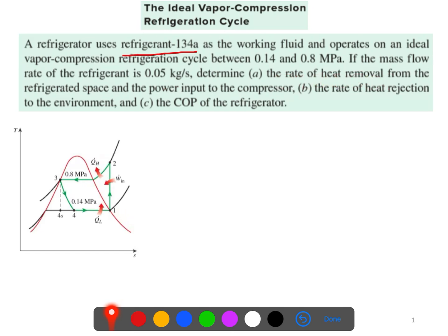We need to determine four things: the rate of heat removal from the refrigerant space (QL), the power input to the compressor (W_in), the rate of heat rejection to the environment (QH), and the coefficient of performance (COP) of the refrigerator.